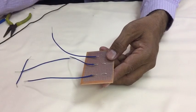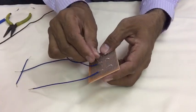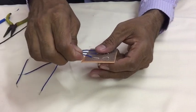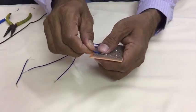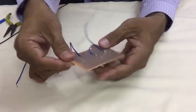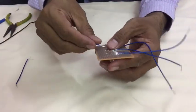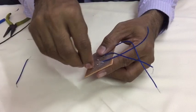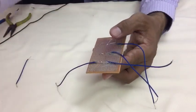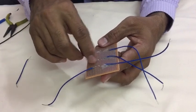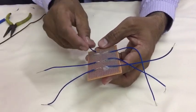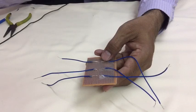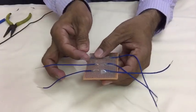To secure it more properly, apply a cello tape on it. Make sure that these two terminals should be in contact, wire and the terminal should be in contact. Similarly, do for second side, secure it with cello tape.